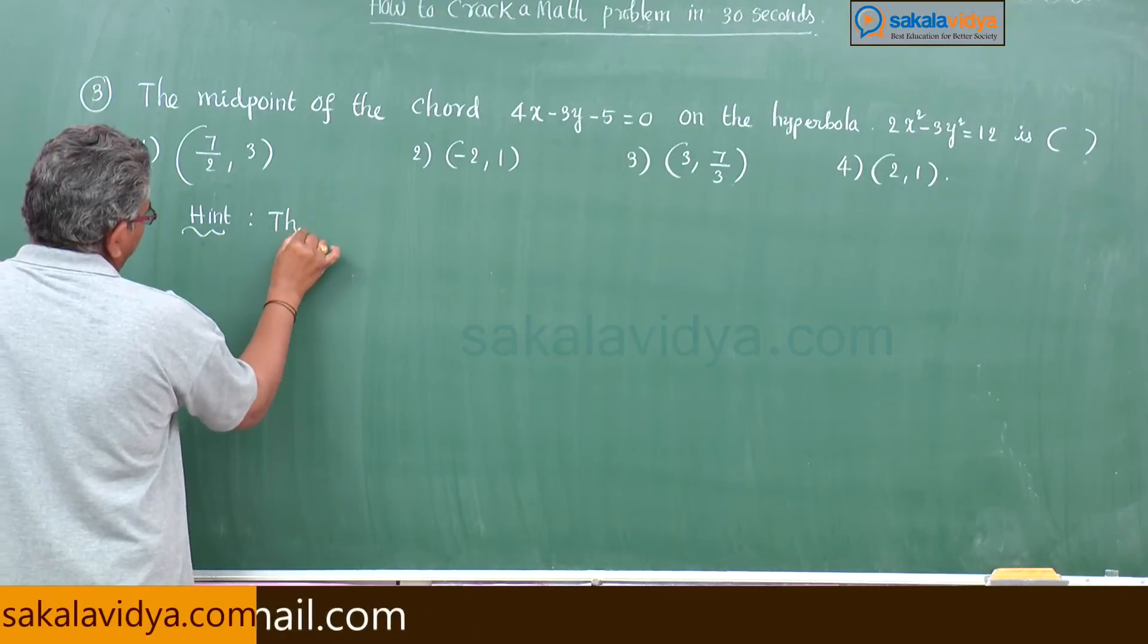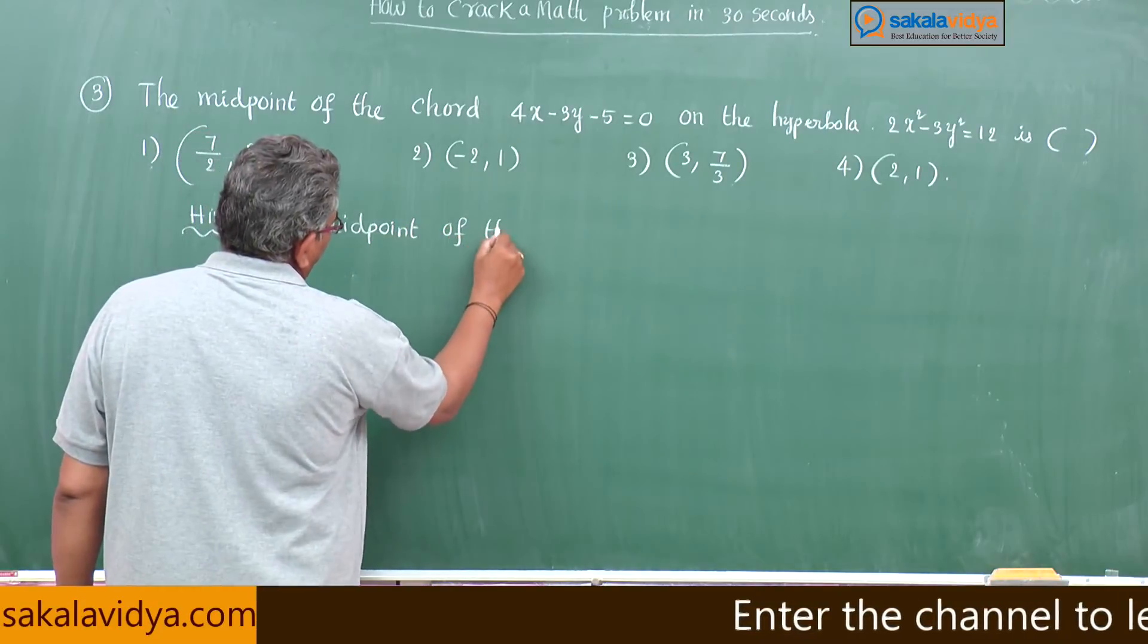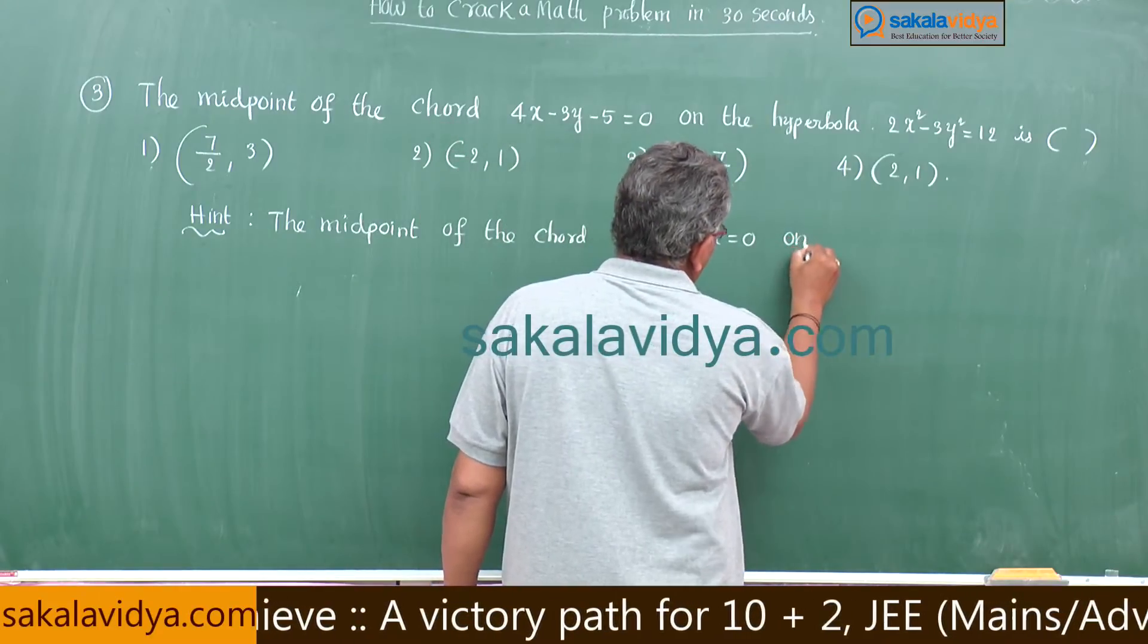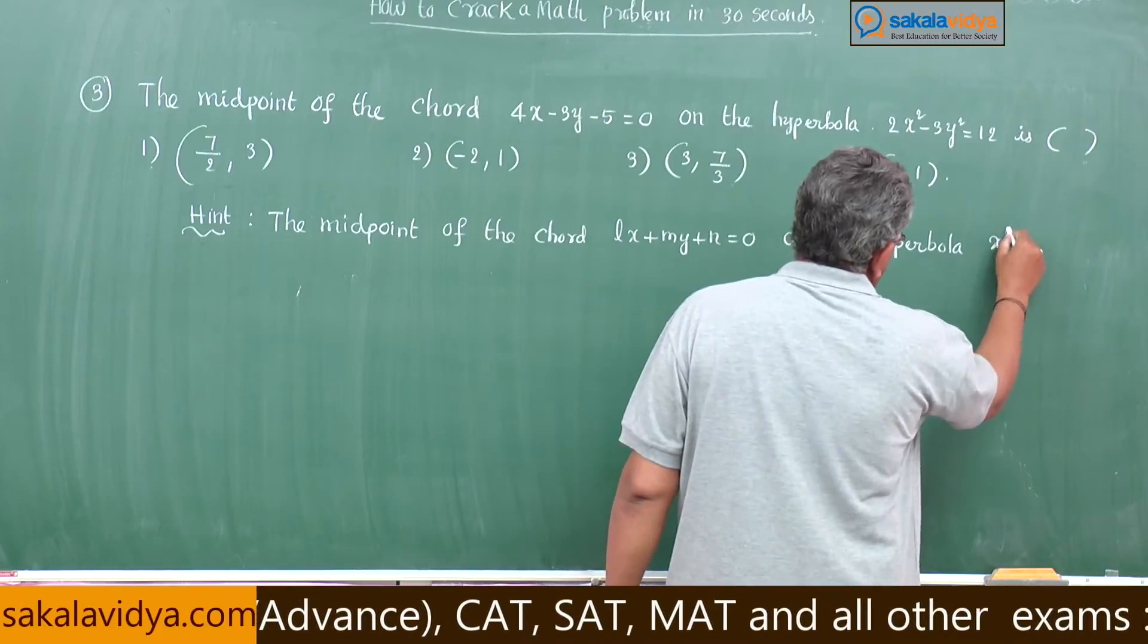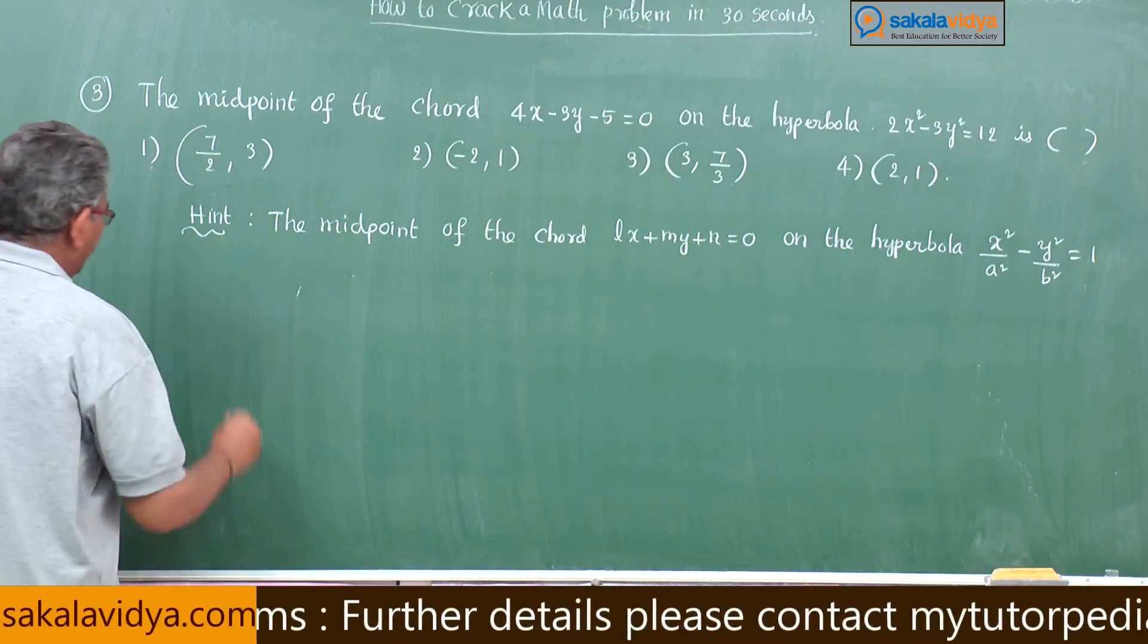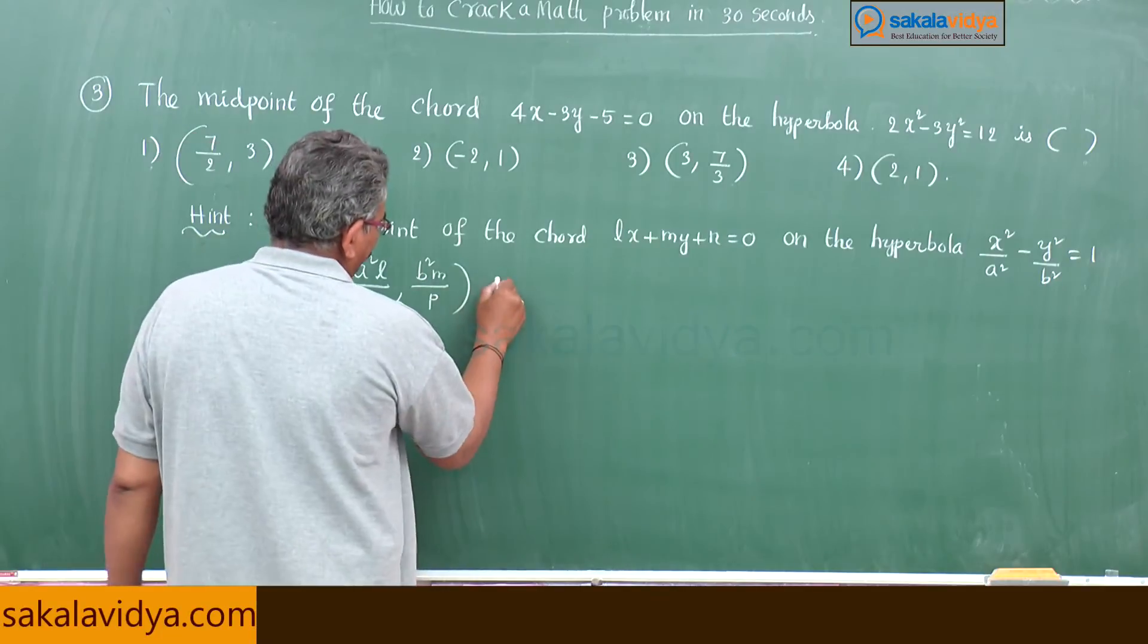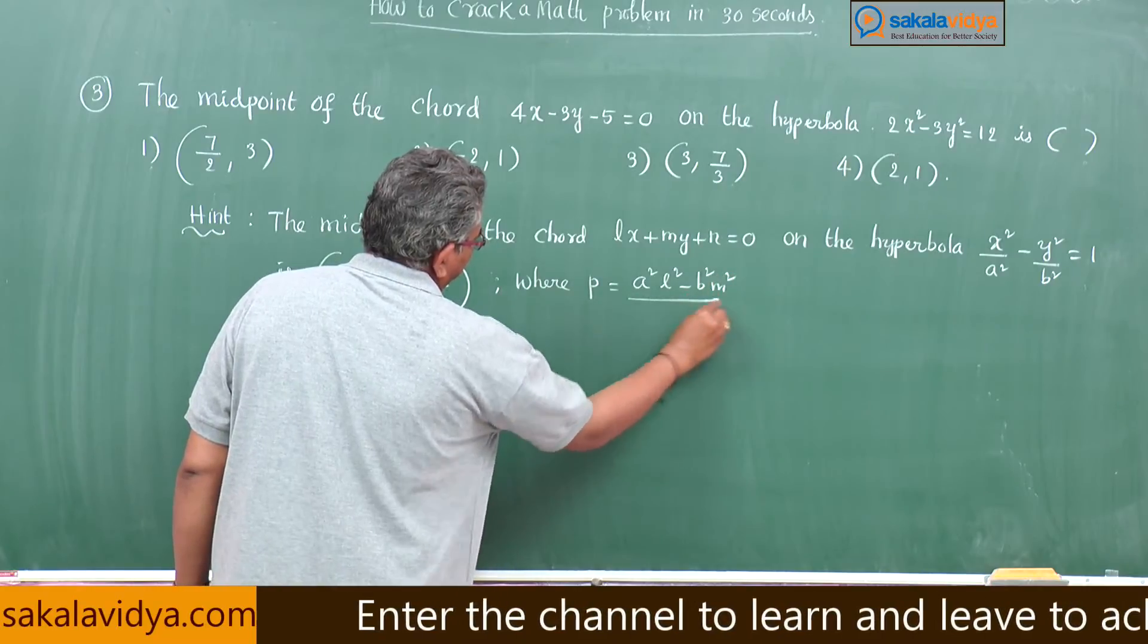Hint: The midpoint of the chord Lx plus my plus n equals 0 on the hyperbola x square by a square minus y square by b square equals 1 is minus a square l by p comma b square m by p, where p stands for p equals a square l square minus b square m square by n.